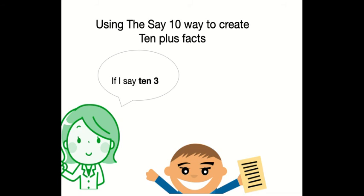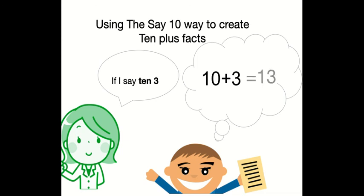If I say 10-3, what are you thinking? Are you thinking 10 plus 3 more? What does that equal? 13. You're right. 10-3 is 10 plus 3, which equals 10-3, which is 13.